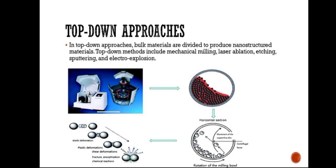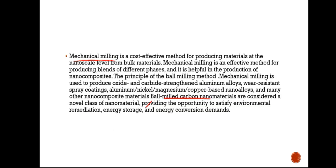In the top-down approach, bulk materials are divided to produce nanostructured materials. Top-down methods include mechanical milling, laser ablation, etching, sputtering, and electro-explosion. Mechanical milling is a cost-effective method for producing materials at the nanoscale level from bulk materials. It is an effective method for producing blends of different phases and is helpful in the production of nanocomposites.